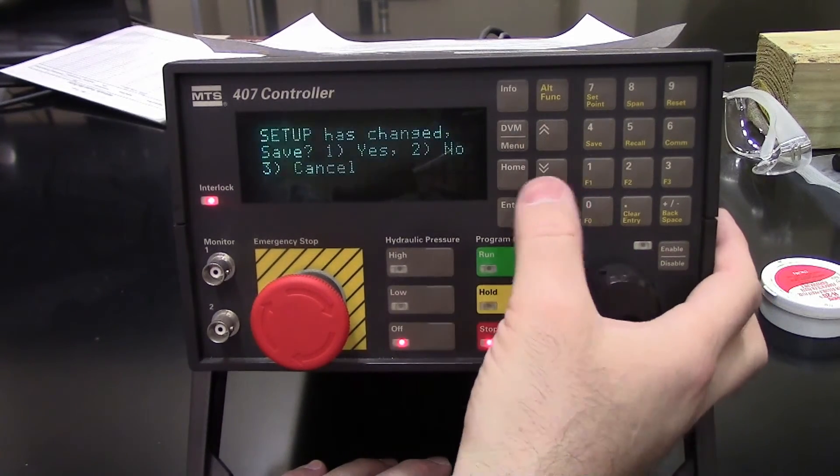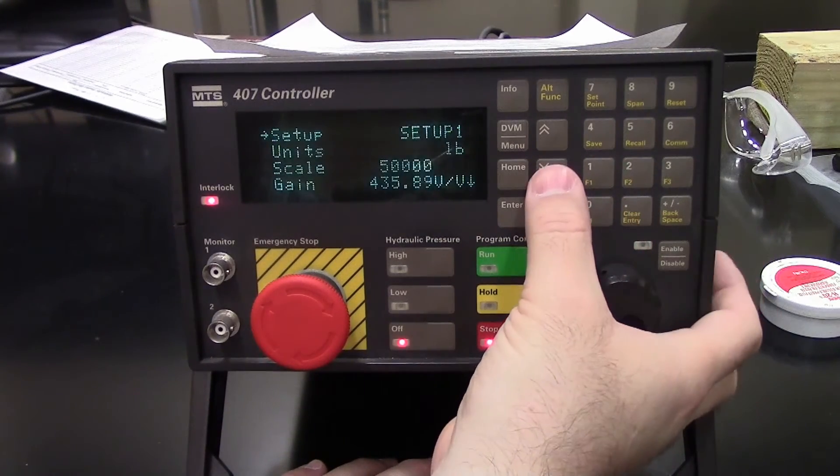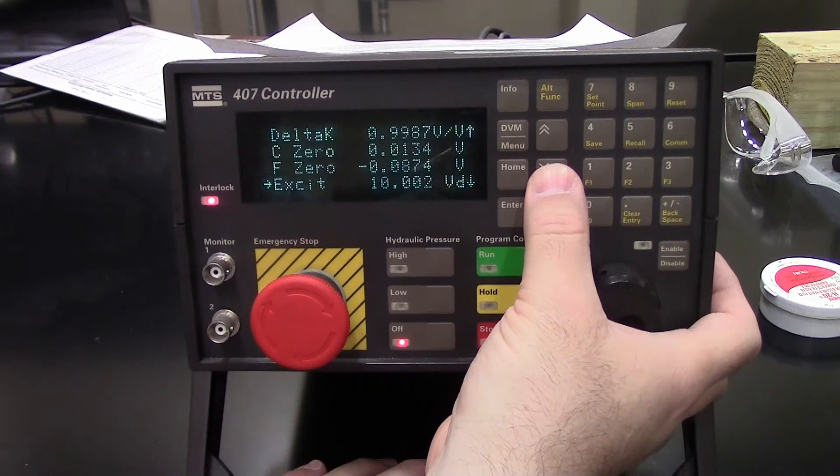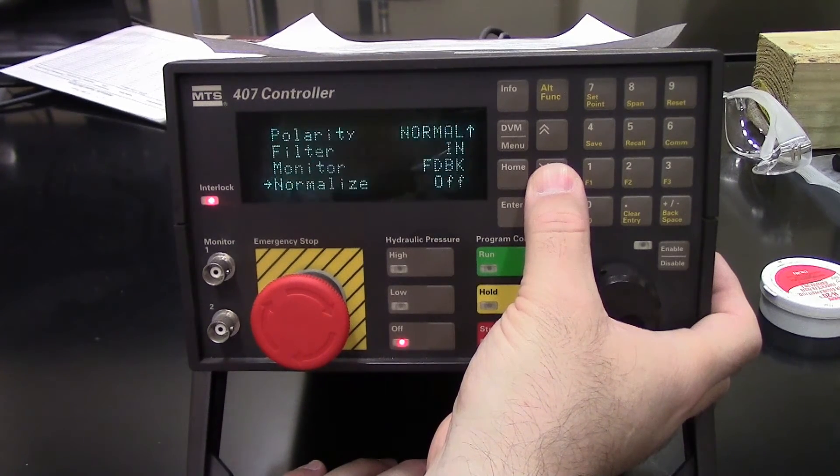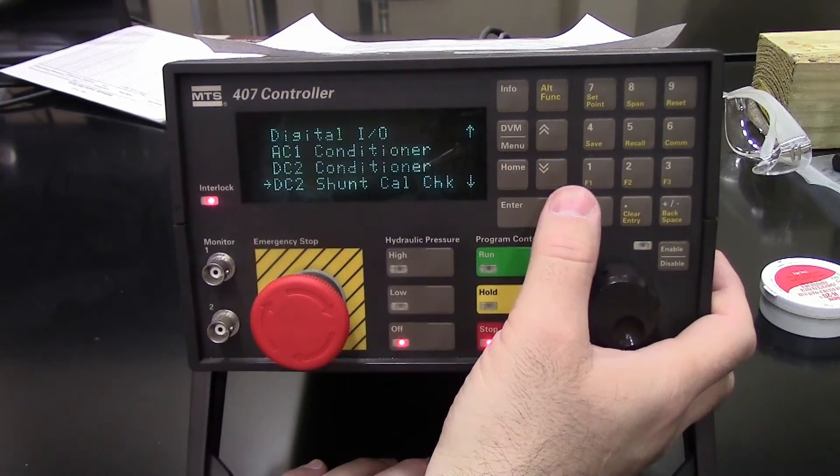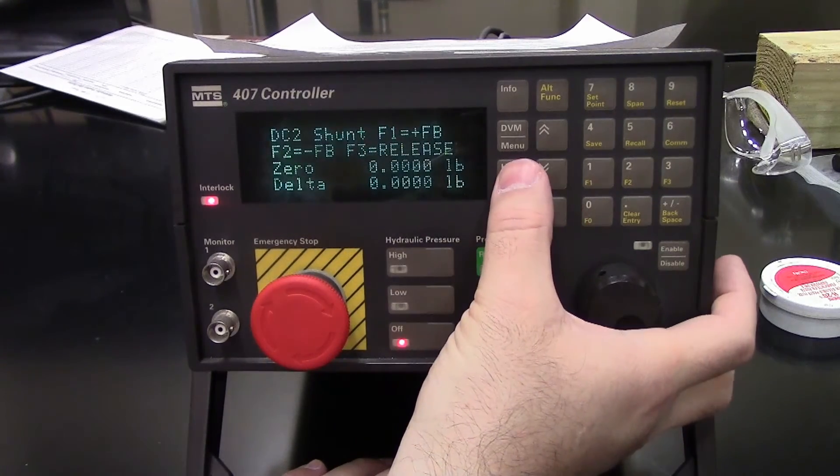We can bring up setup 1. There's the 50,000 pound scale. There's my gain. That will depend on your particular load cell that you've got. DC shunt calibration check. You can do a shunt calibration if you have your calibration resistors.